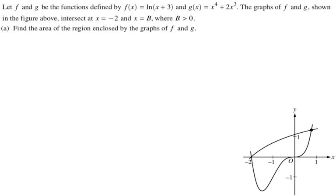Let f and g be the functions defined by f(x) equals the natural log of x plus 3, and g(x) is x to the 4th plus 2x cubed. The graphs of f and g are shown above, but I put them below in the corner, intersect at negative 2 and at x equals b, where b is greater than 0.